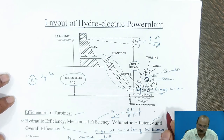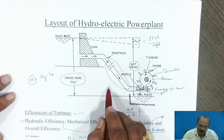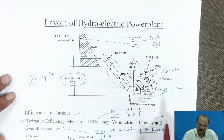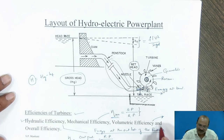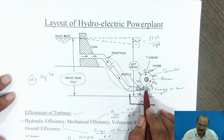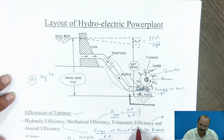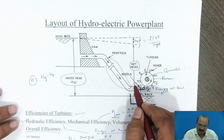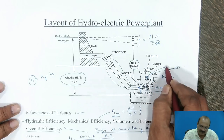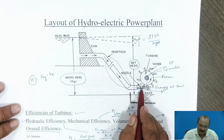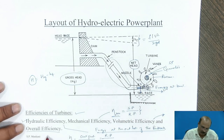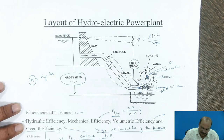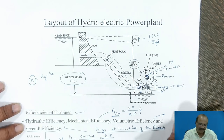Volumetric efficiency accounts for the fact that not all water at the nozzle outlet is utilized by the buckets on the runner — some part of the water is wasted. Volumetric efficiency equals total water hitting the bucket divided by total water coming out from the nozzle. Overall efficiency is the shaft power divided by water power, giving Nu_O = shaft power / water power.